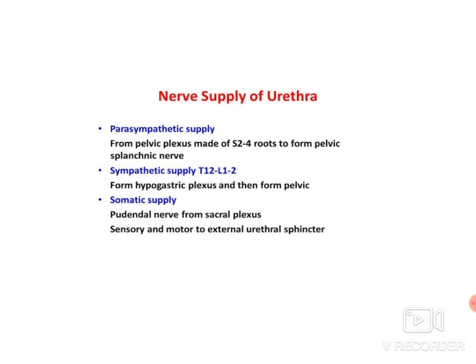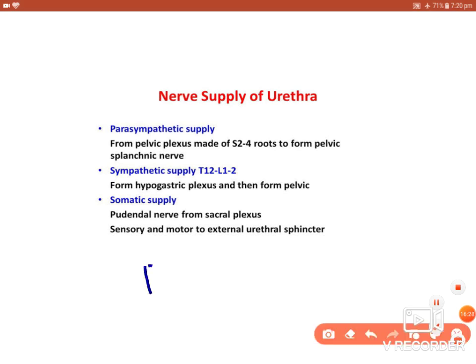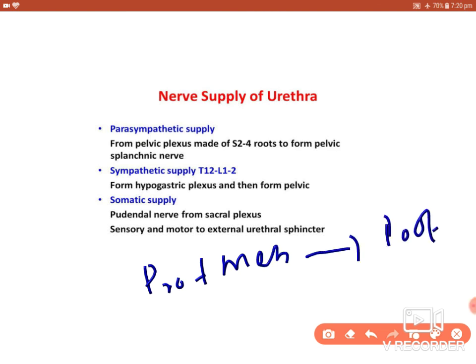For lymphatic drainage: the posterior part of the urethra — comprising the prostatic part and the membranous part — drains to the internal iliac and external iliac lymph nodes. The anterior part, which is the spongy part, drains to the superficial and deep inguinal lymph nodes.